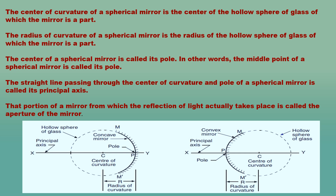The center of a spherical mirror is called its pole — the middle point of the mirror, represented by P. The pole lies on the surface of the mirror. The straight line passing through the center of curvature C and pole P of a spherical mirror is called its principal axis. The principal axis is normal or perpendicular to the mirror at its pole.